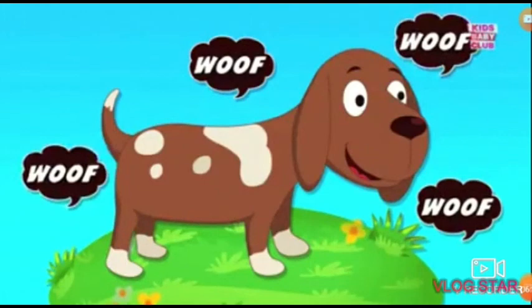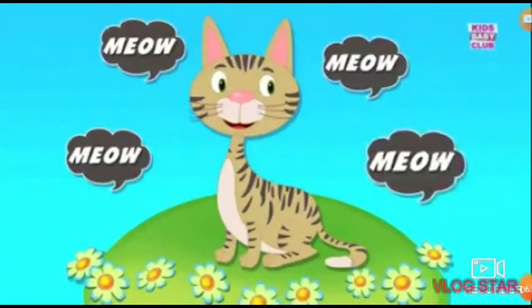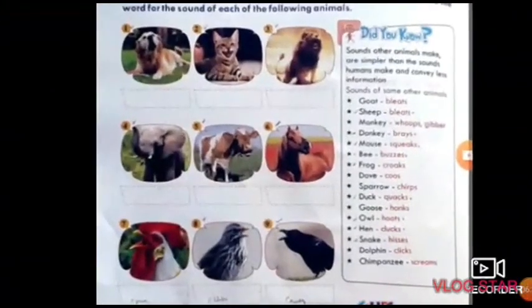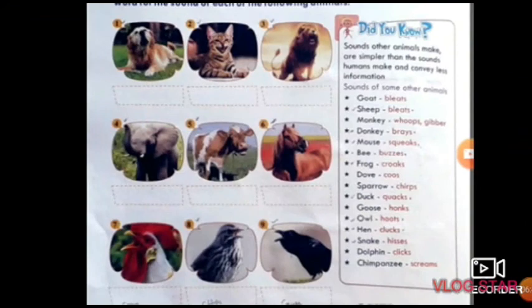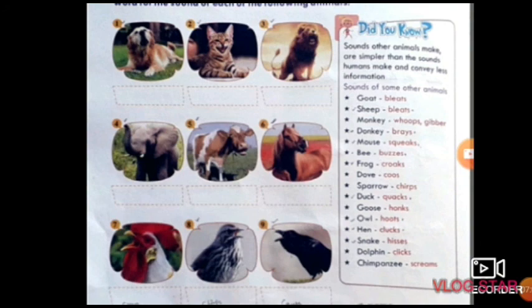A dog - woof. A cat - meow. A dog - bark. A cat - meow. A lion - roar. An elephant - trumpet. A cow - moo. A horse - neigh. A sparrow - chirp. A crow - caw. A hare - squeak. A snake - hiss.